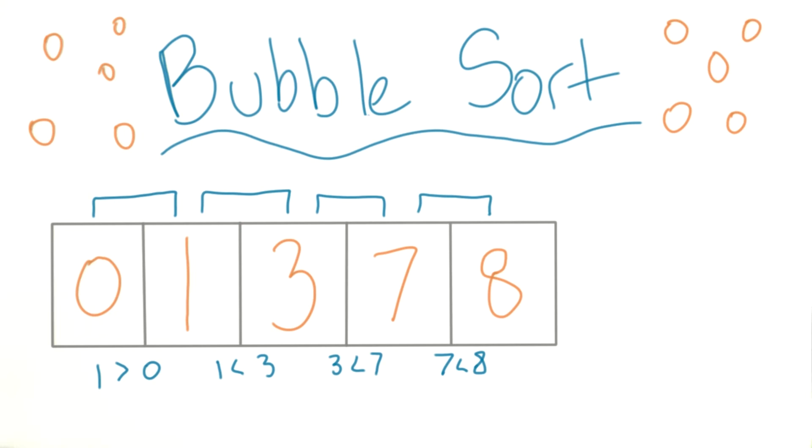Actually, there's a way we could have saved ourselves some time with this algorithm. If you noticed, each time we went through the array, we compared the last few values, even though we really didn't need to after a while. It made sense to compare 7 and 8 when we were bubbling up 7. But when we were bubbling up some of the lower numbers, this comparison didn't really change anything.